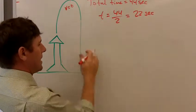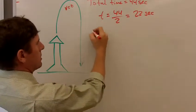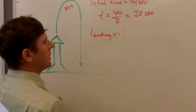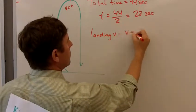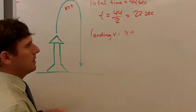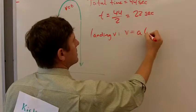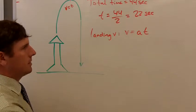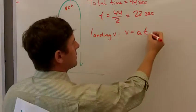So in order to figure out how fast, let's do the landing velocity first. Landing V. How fast is it going? Well, V, when there is acceleration or free fall involved, equals AT. Velocity equals acceleration times time. That's for an object that is changing its velocity while it's going along. In this case, it's free fall.